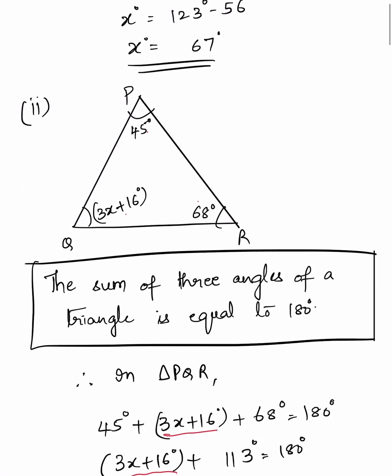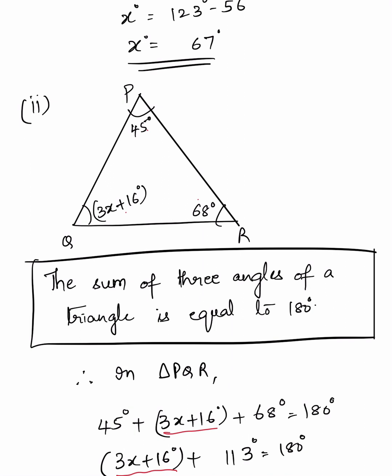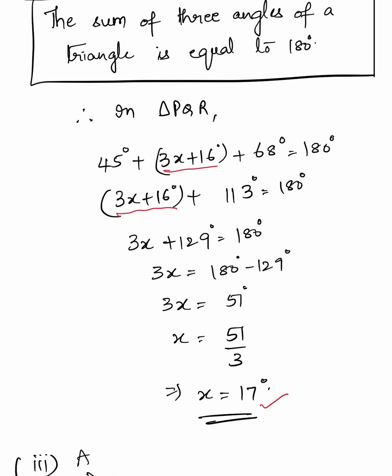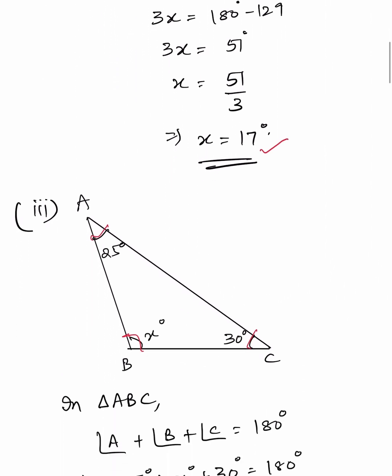Second part: Triangle PQR is given. The sum of three angles of a triangle is equal to 180 degrees. Therefore in triangle PQR, P plus Q plus R equals 180 degrees. So 45 plus 3X plus 16 plus 68 equals 180. Simplifying: 3X plus 129 equals 180, so 3X equals 51, therefore X equals 51 divided by 3, which is 17 degrees.